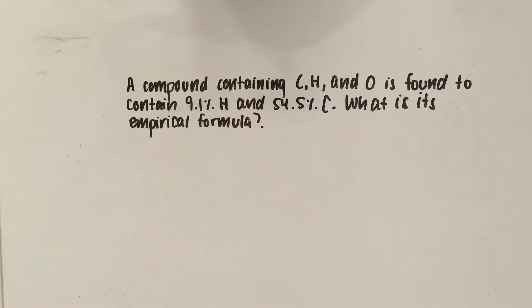This problem tells us that we have a compound containing C, H, and O, and it's found to contain 9.1% hydrogen and 54.5% carbon. What is its empirical formula?